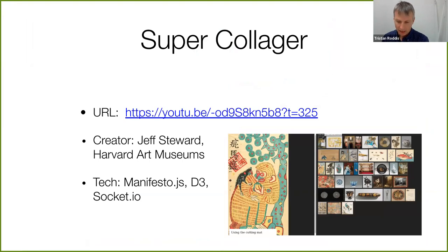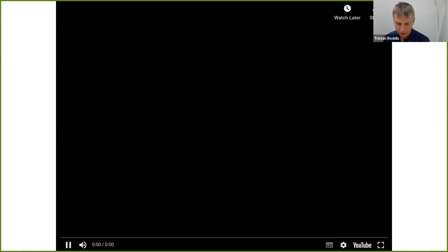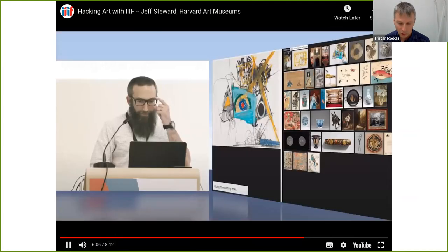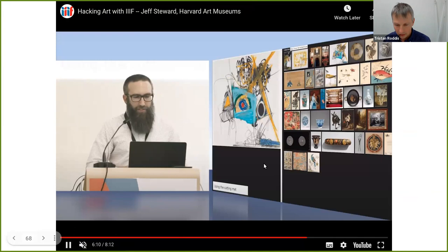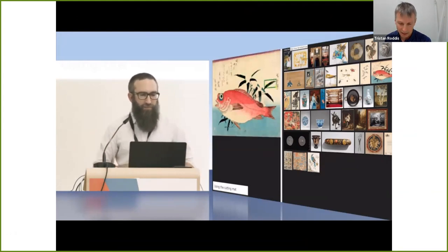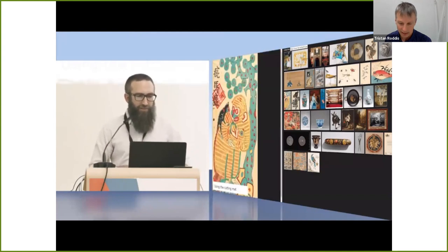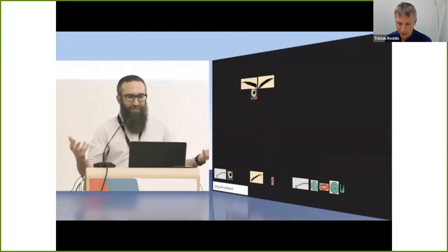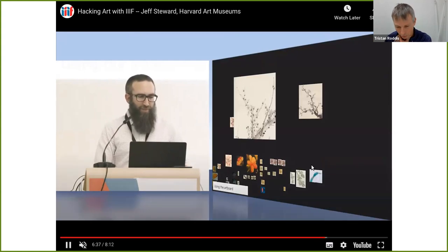Another project from Jeff Stewart of Harvard Art Museums is Super Collager. You start by selecting regions from artworks on the right-hand panel, then select different shapes and regions on the left-hand side. As you finish selecting, those get automatically added to a palette of circles and shapes, which you can then use to create your own artworks.